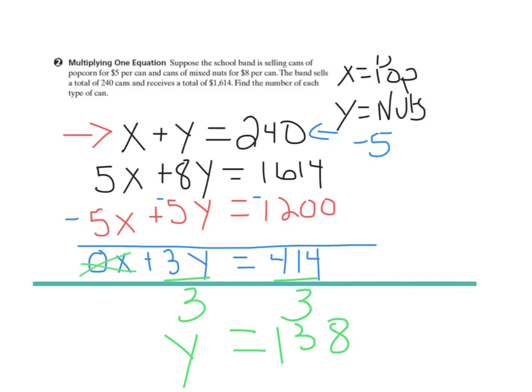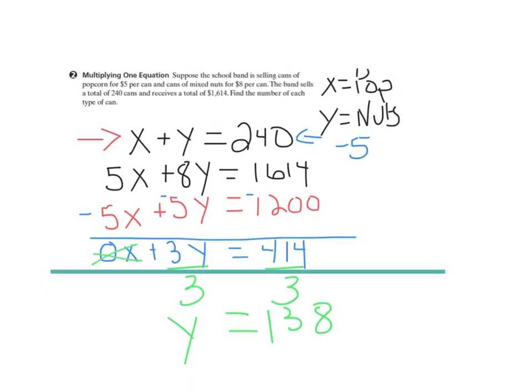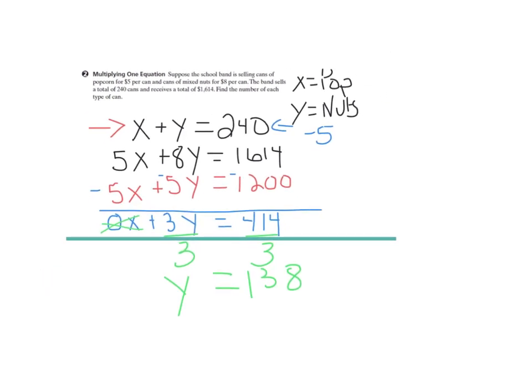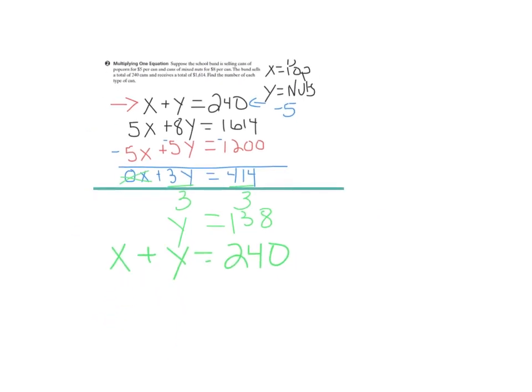So that means we sold 138 cans of mixed nuts, which means if we plug that back into x plus y equals 240. Remember, y is 138, so x has to be what? One step equation there. So x equals 102.